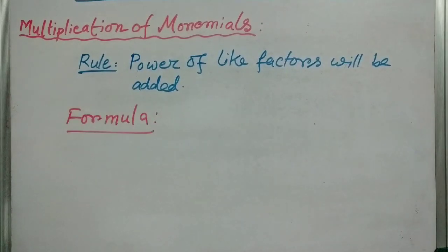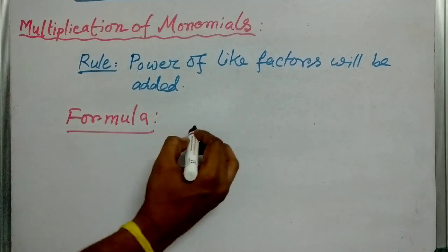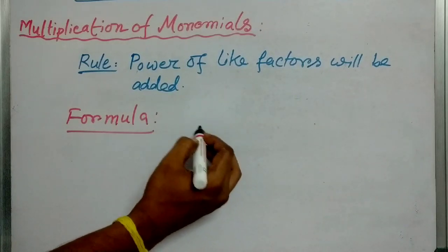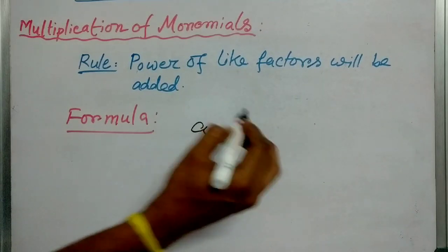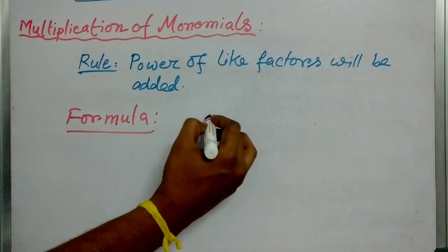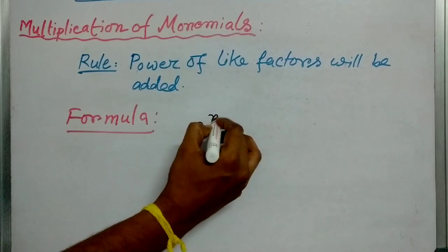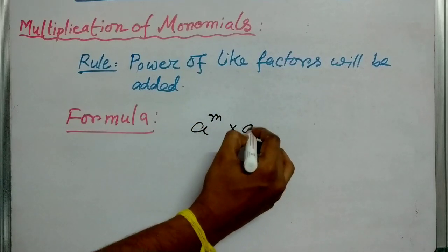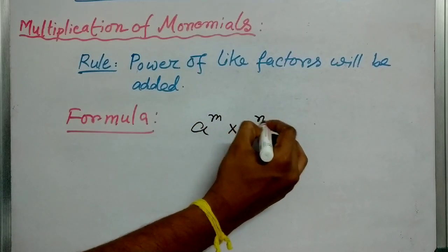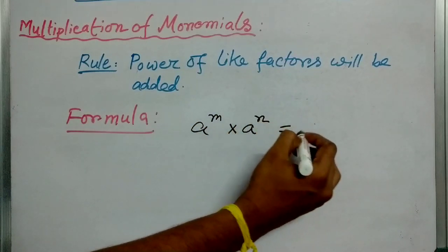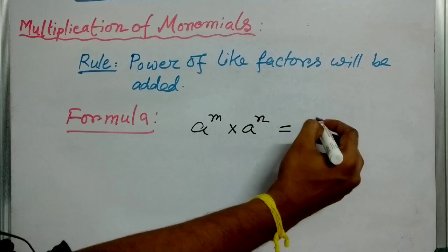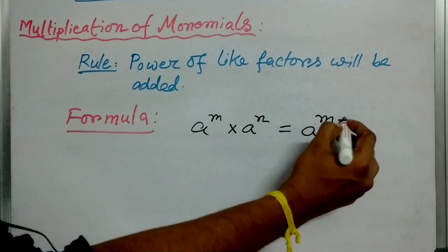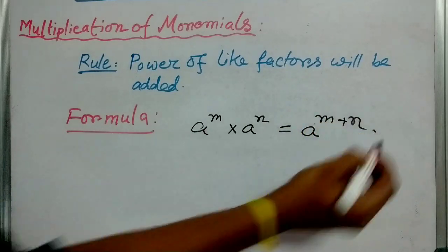Therefore, the formula is: suppose the like factor is a, so a to the power m multiplied by a to the power n will be equal to a to the power m plus n.